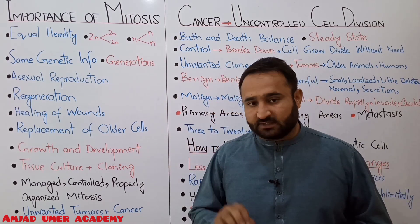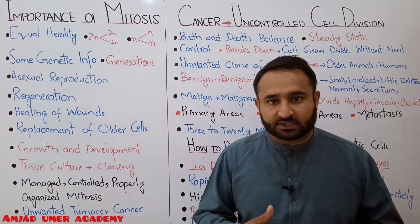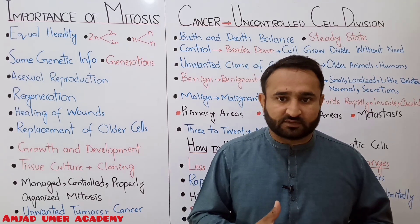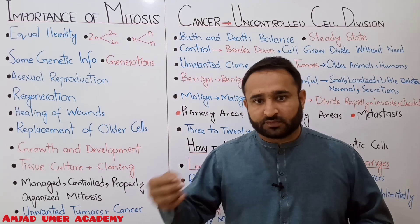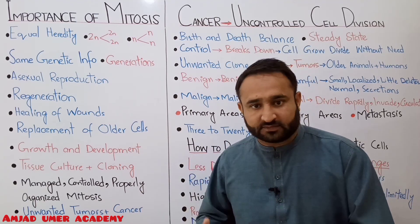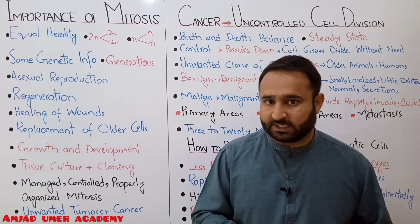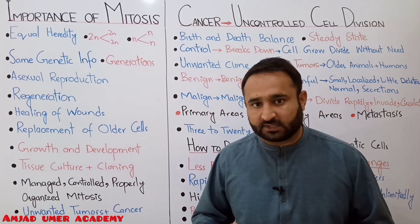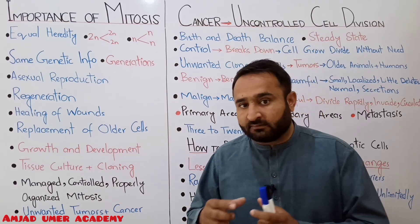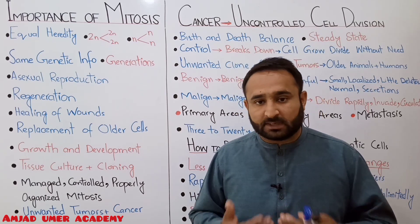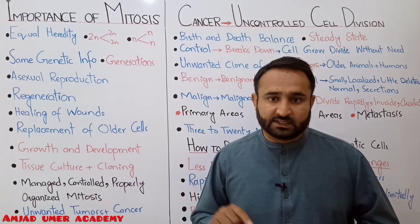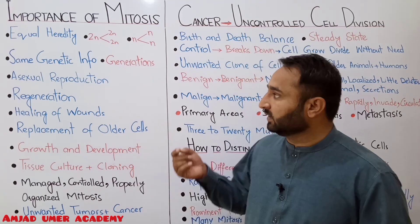Mitosis ensures equal distribution of hereditary information. If there is one diploid cell, two diploid cells are formed from it. If there is one haploid cell, two haploid cells are formed. The chromosome number and the amount of DNA remain equal in parent and daughter cells — they do not change, they do not reduce.